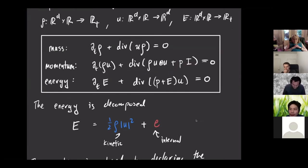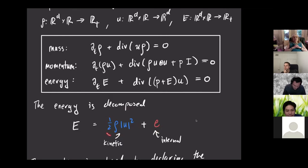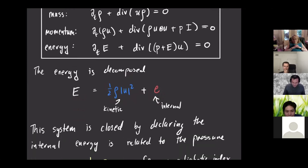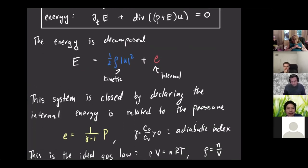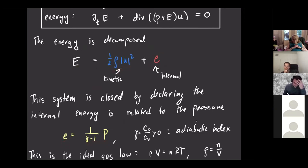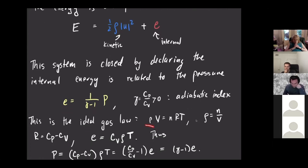The total energy field has two pieces: the kinetic energy, one half rho V squared, and internal energy. The pressure is declared to be some given function of this internal energy together with the mass density. A very common declaration is the ideal gas equation of state, which says the internal energy is related to the pressure linearly through some adiabatic constant. Although you may not have seen it in this form, this is nothing but the ideal gas law PV equals nRT with appropriate constants.